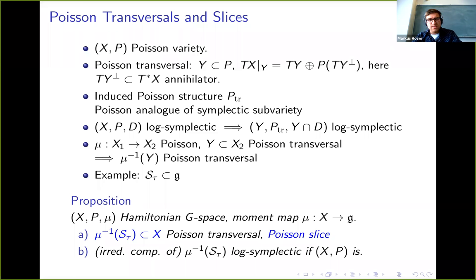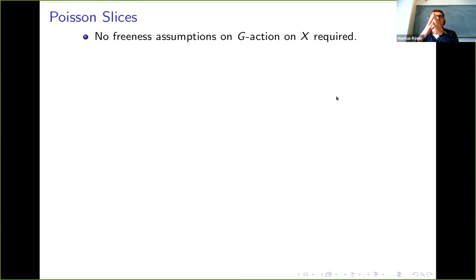So in a way, this is a machinery to build new Poisson manifolds out of old ones starting from a Hamiltonian G space. The nice thing about this is that we don't really need to assume very much about the G action on X. We don't need to assume that it's free. The construction will just work.